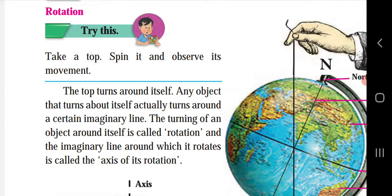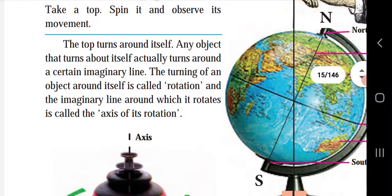The top rotates at its one axis — that is the spinning — and the imaginary line will be seen on the top. The top turns around itself. Any object that turns around itself actually turns around a certain imaginary line. The turning of an object around itself is called rotation, and the imaginary line around which it rotates is called the axis of rotation. Similarly, the earth rotates around its axis, and the earth's axis is inclined.